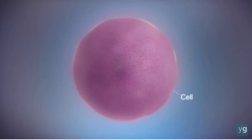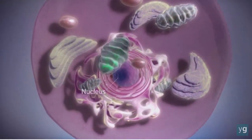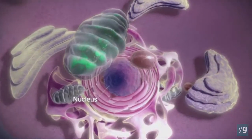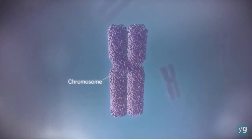Here is a cell, the basic unit of all living tissue. In most human cells there is a structure called the nucleus. The nucleus contains the genome. In humans the genome is split between 23 pairs of chromosomes.